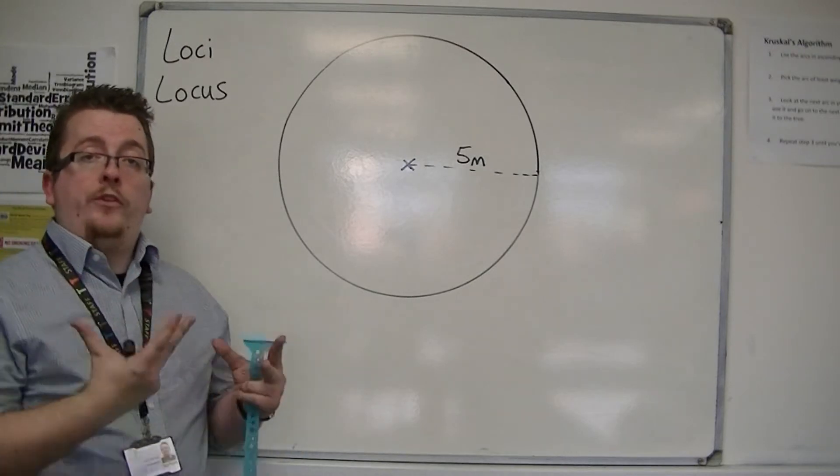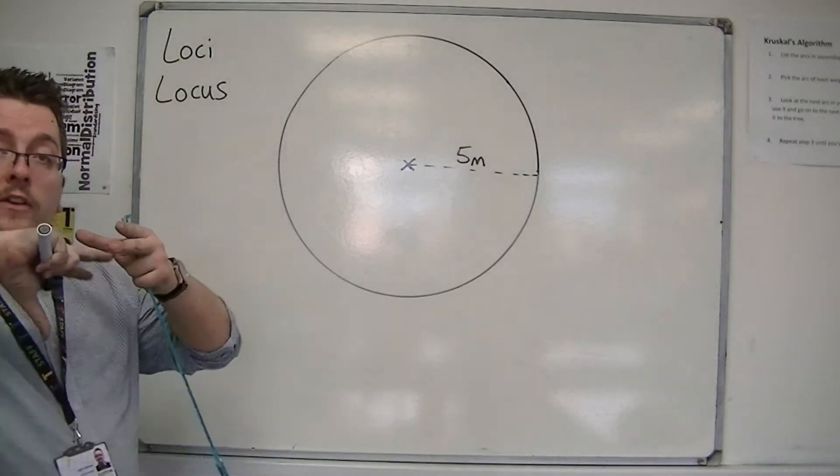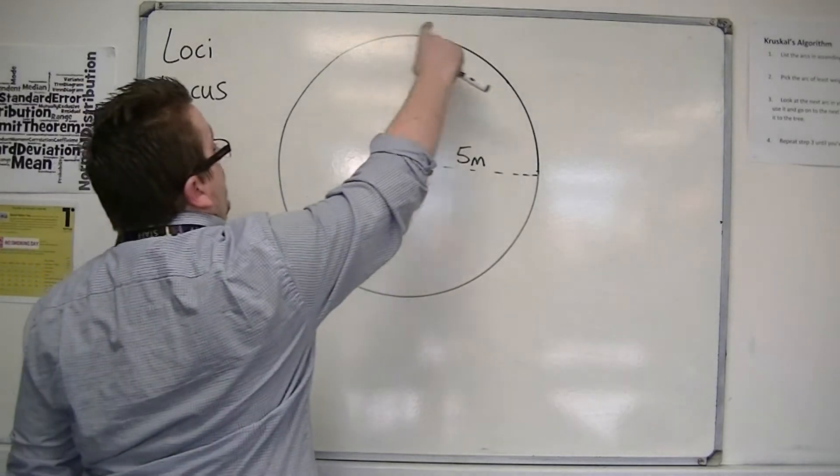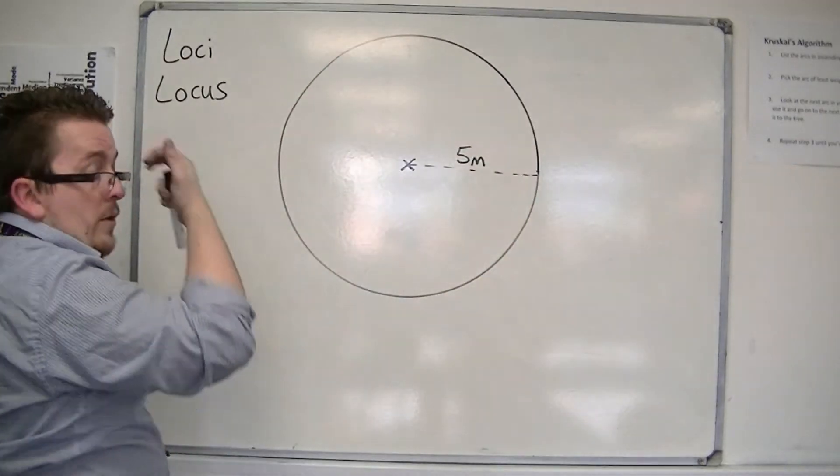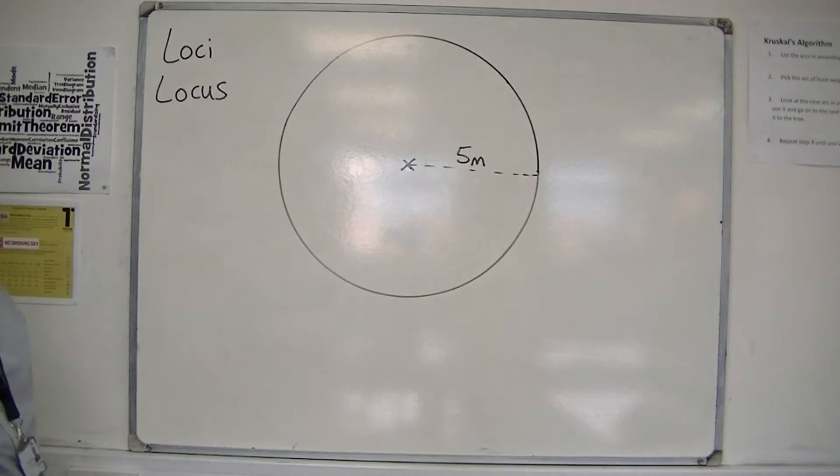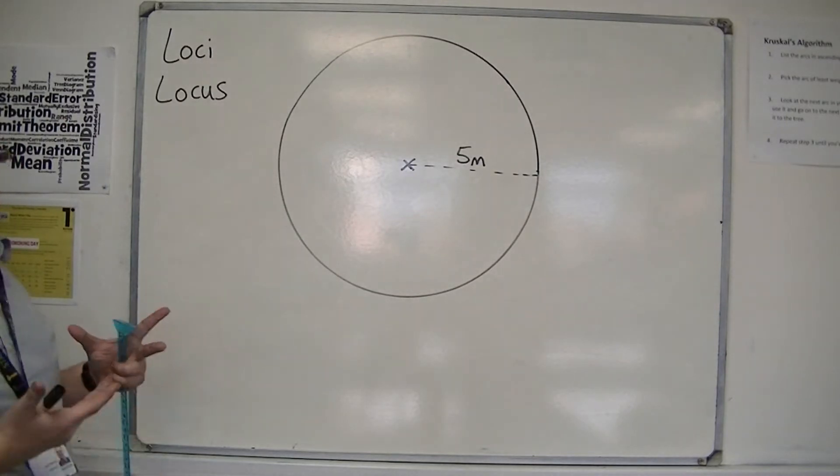And that is what we call a locus of a point. It is a series of points around a particular point with a certain condition upon it. So that would be the locus of a point.